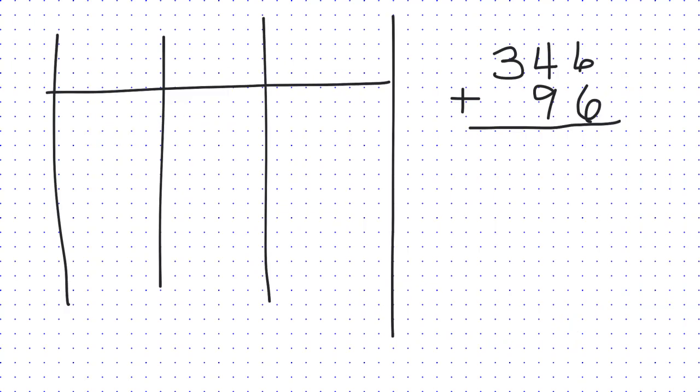All right, so for this problem we have 346 plus 96, and we're going to model that in our place value chart, and that's going to be our hundreds, tens, and ones.